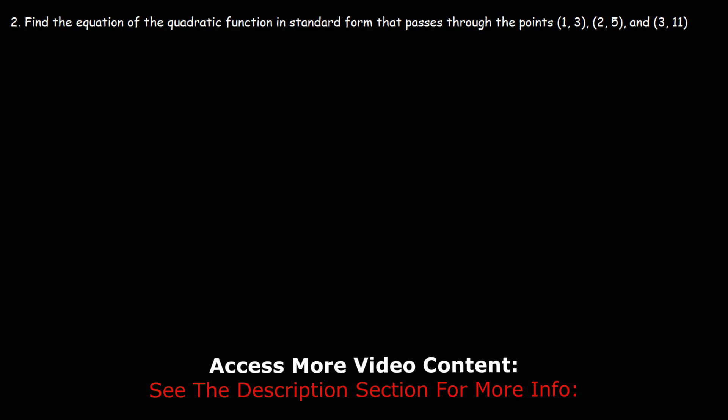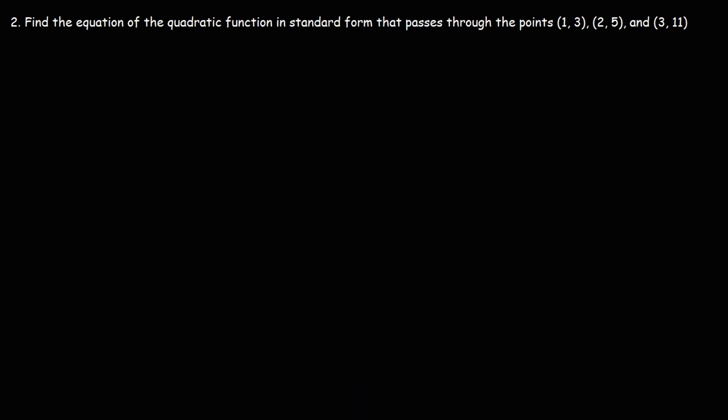Number 2. Find the equation of the quadratic function in standard form that passes through the points (1, 3), (2, 5), and (3, 11). It is a little bit harder than the last one because we don't have the y-intercept. So we're going to need a system of three equations in order to determine the variables a, b, and c. We have y is equal to ax squared plus bx plus c, the standard form of a quadratic equation.